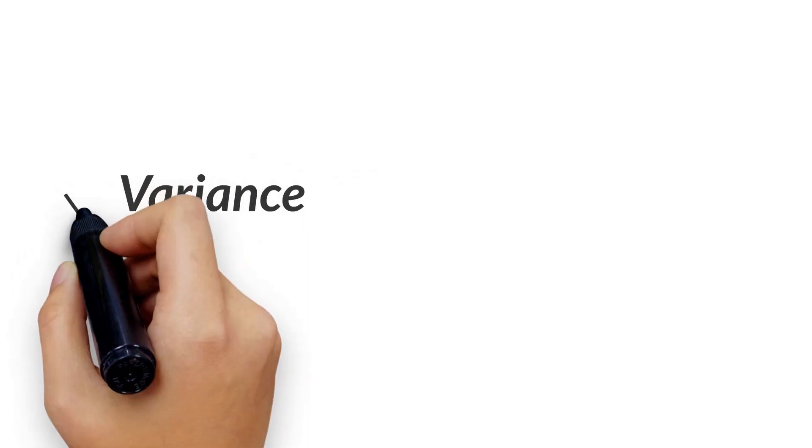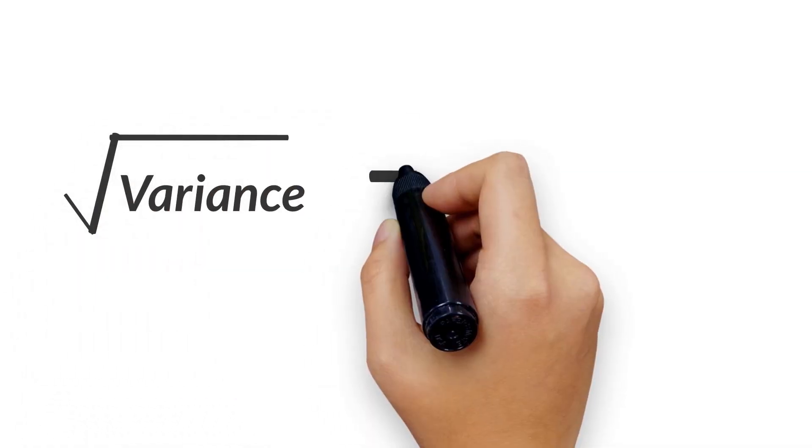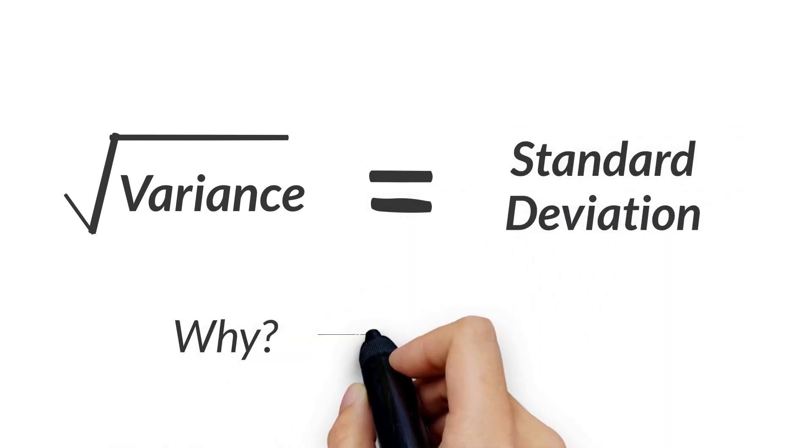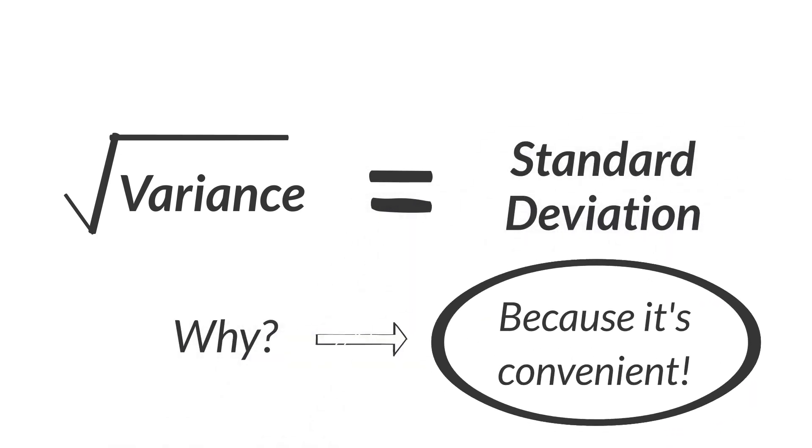Firstly, why do we take the square root of variance? Simply put, it's because it's more convenient. Variance is the mean of square deviations from the mean.